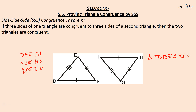Now notice how I put my statements here — DF and DF, IH and IH. So D has to correspond with I, just like it's the first letter. F has to correspond to H. G would have to correspond to E. Those are corresponding angles. So angle D corresponds to angle I. I'm really making a big deal about order because it matters a lot when you're dealing with corresponding parts and triangles.